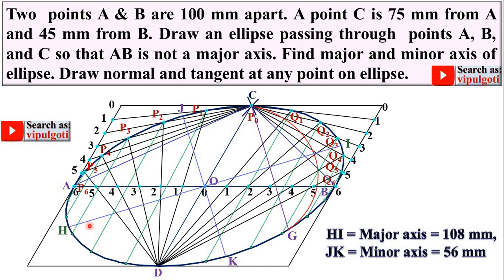So now you can measure the distance HI with the help of this scale and that will be 108 mm, and JK will be 56 mm. So this is your next answer: find major and minor axis of ellipse.